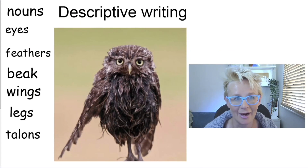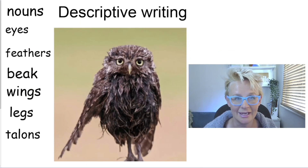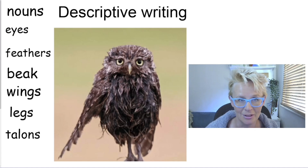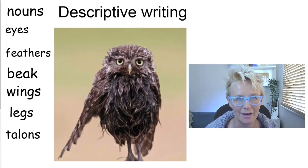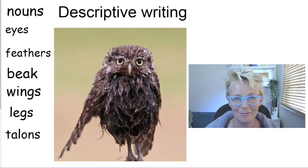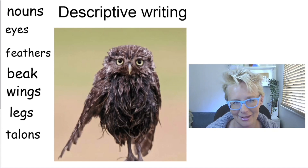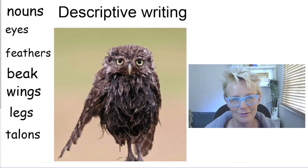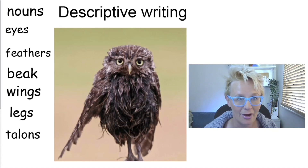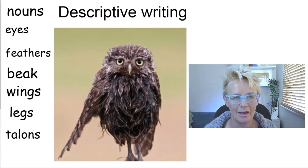How are we going to write a spine poem? First of all, we need something to write about — you might want to find something in your room, like a picture, an object, or a piece of artwork. For my example, I'm going to use this owl that I've got here, and for the spine we need to pick out the nouns first.